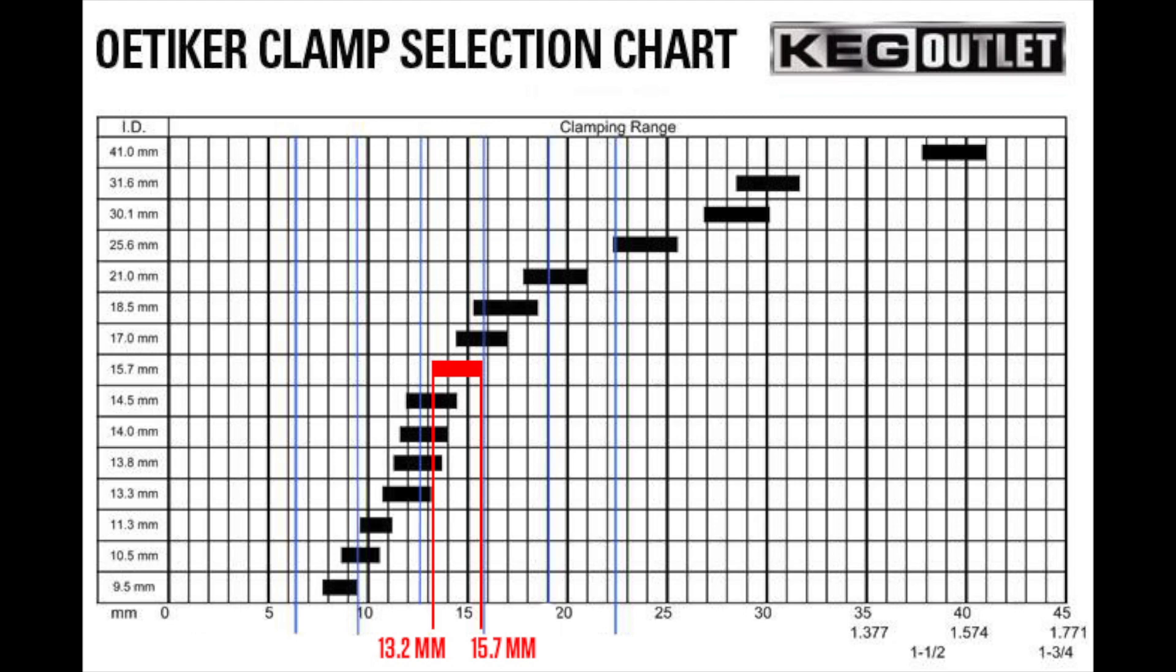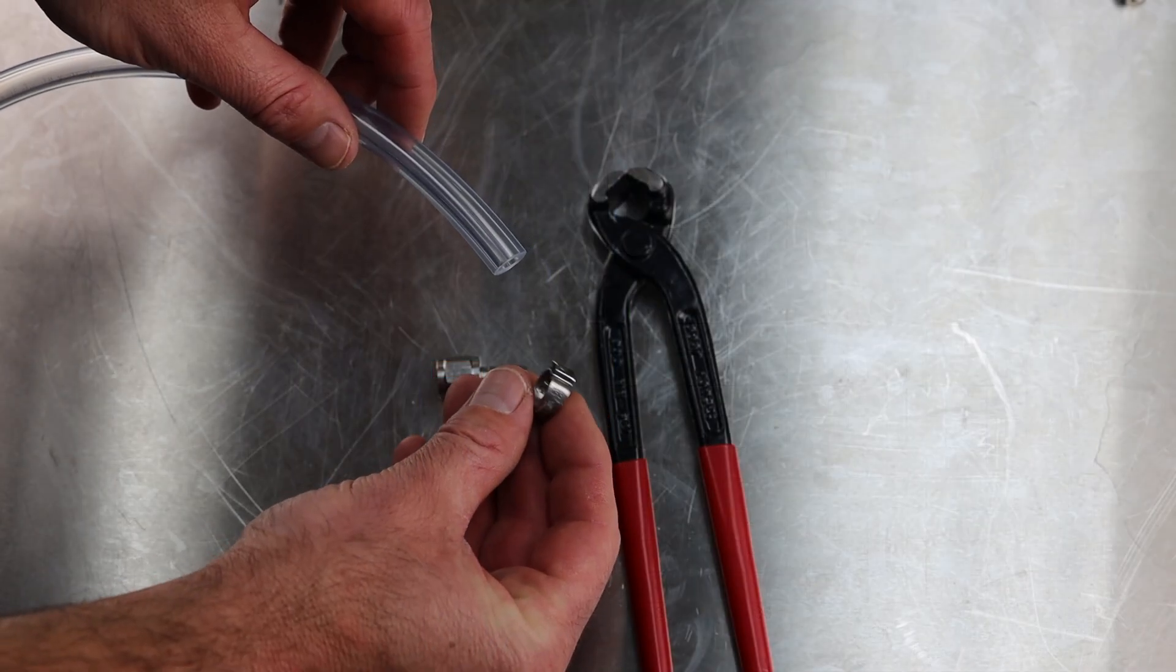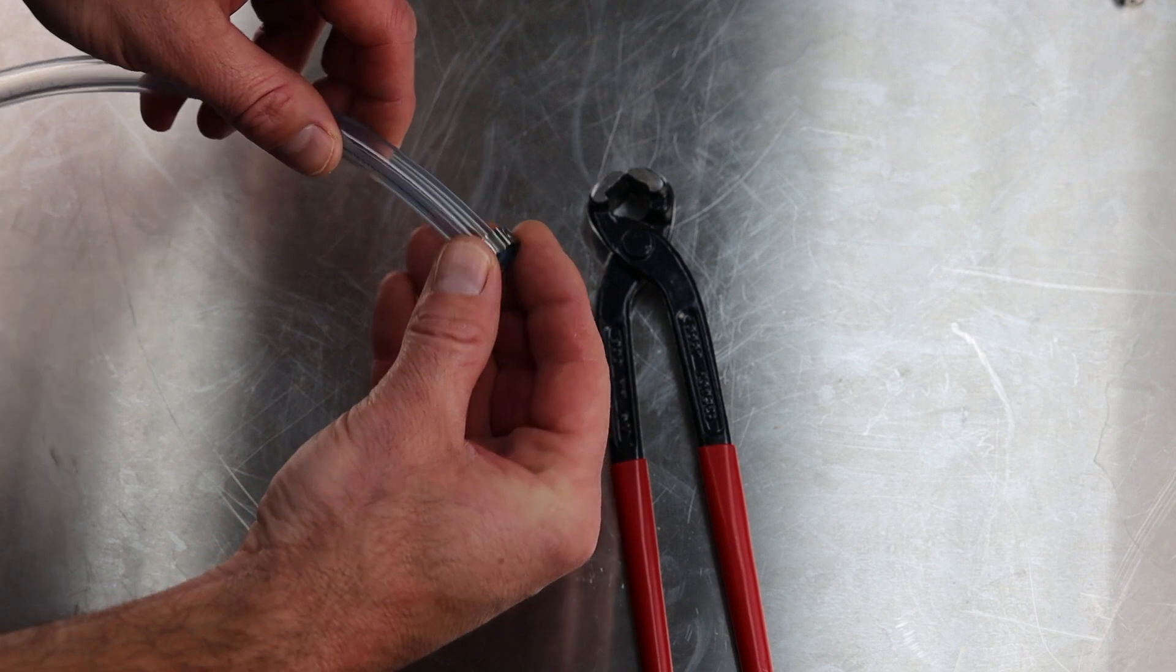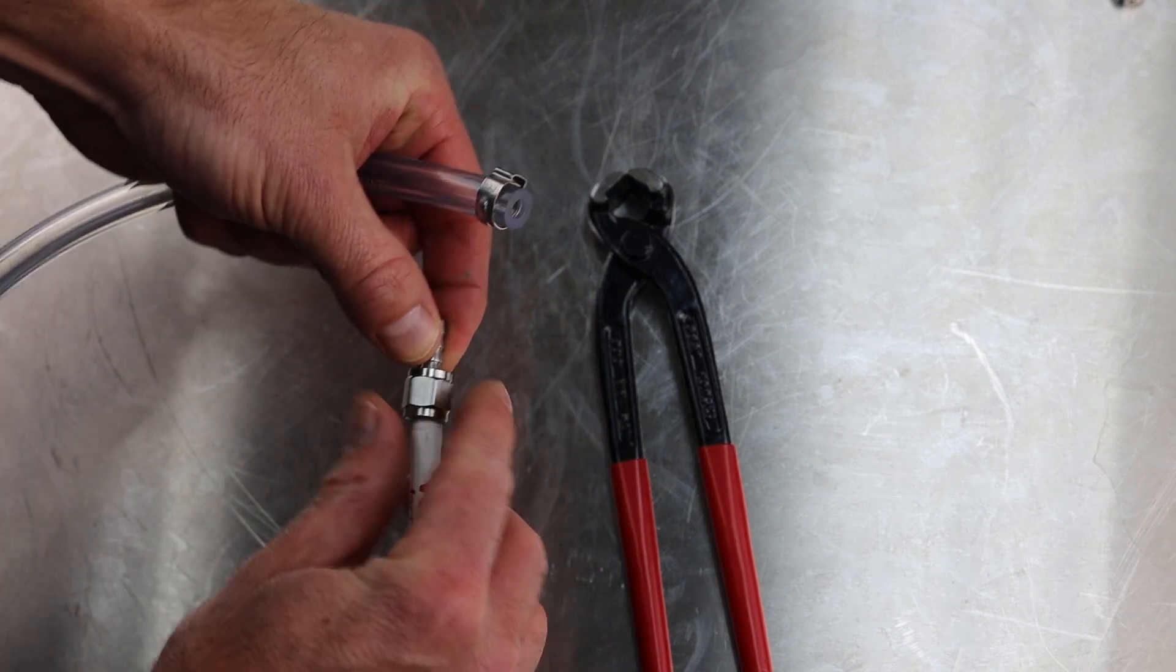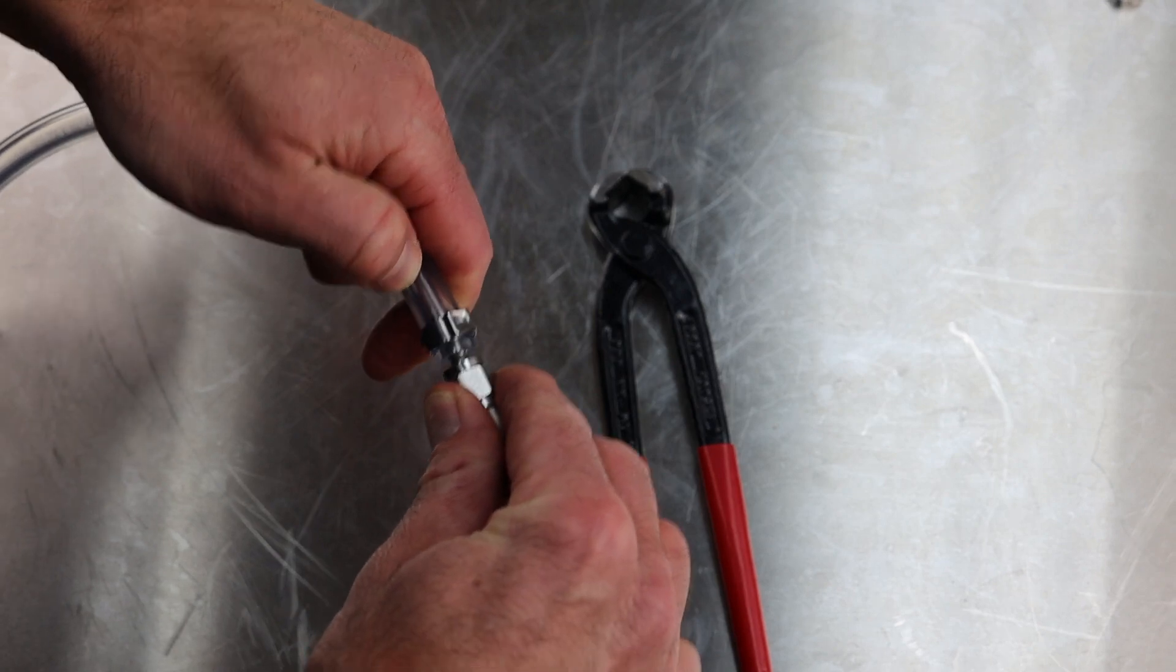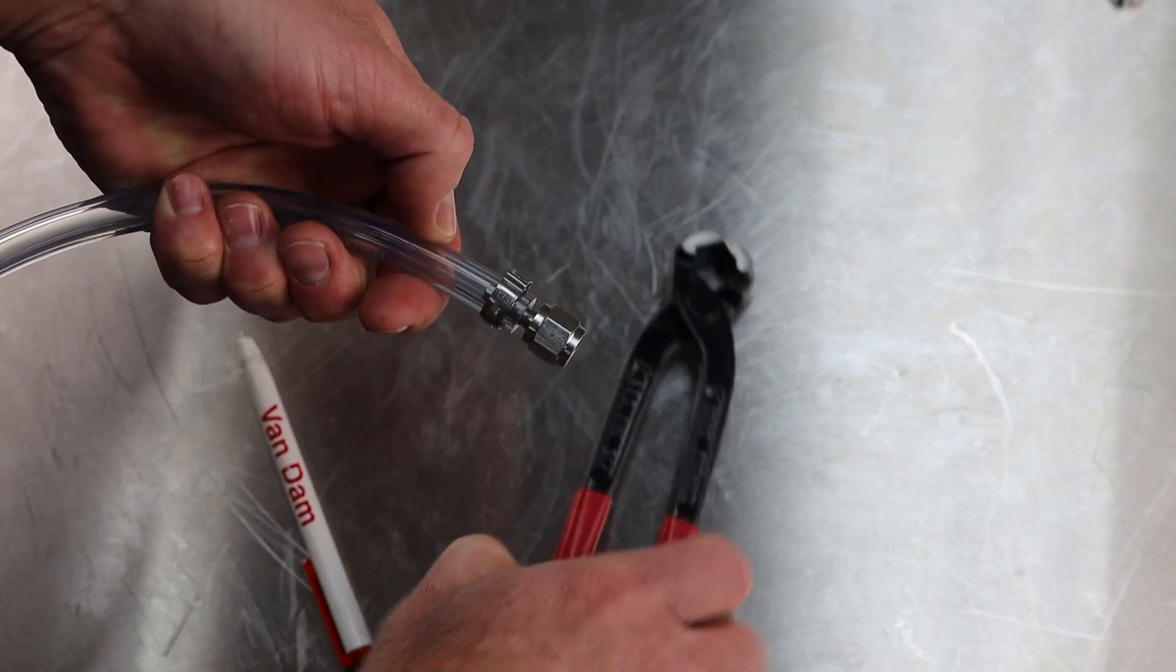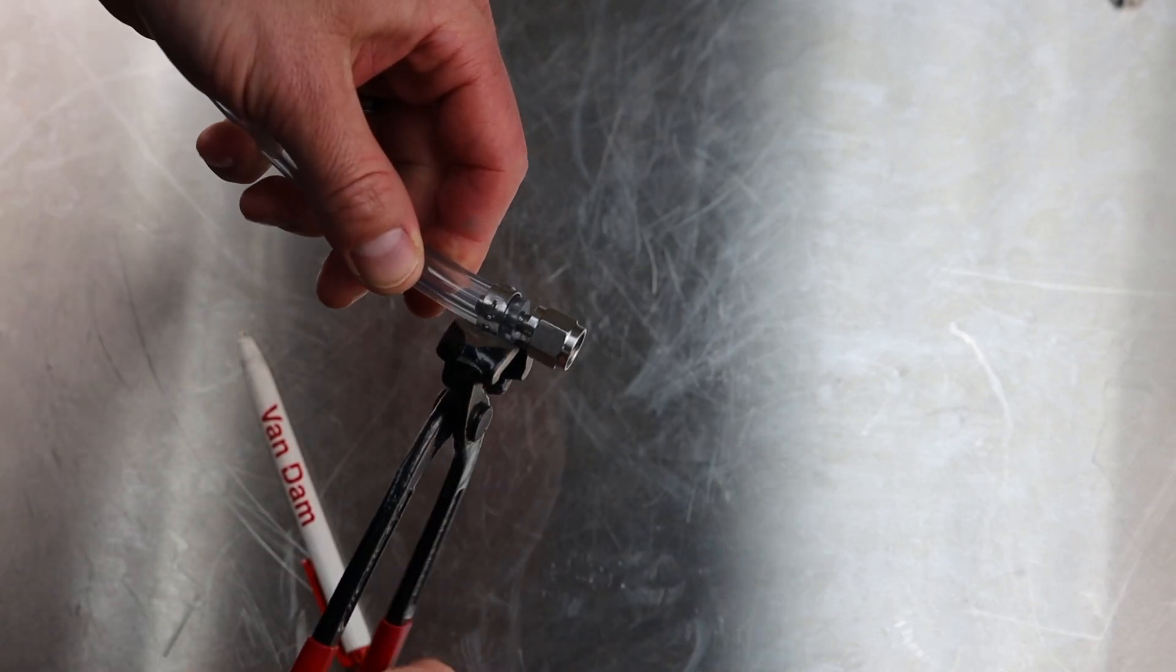Here we'll show you a couple very common sizes used in the draft beverage industry. This is a beverage hose with a 3/16 inch inner diameter and a 7/16 inch outer diameter, and we're clamping on a quarter inch barb with a 13.3 Oetiker clamp.